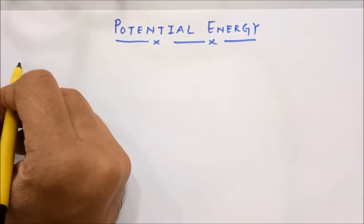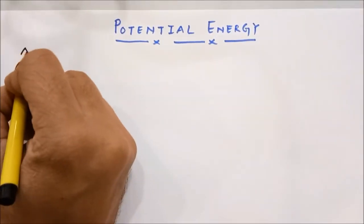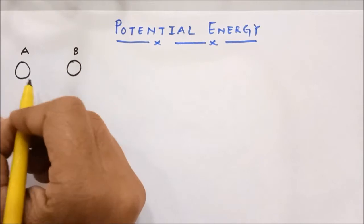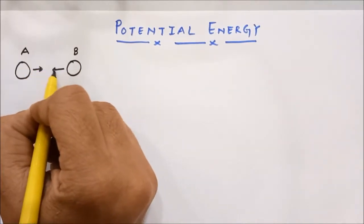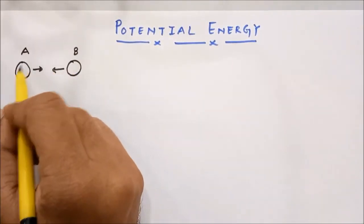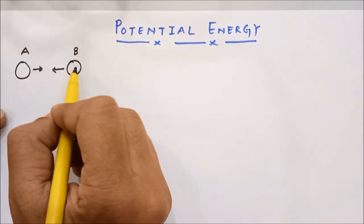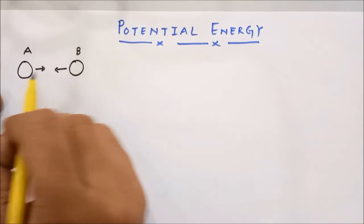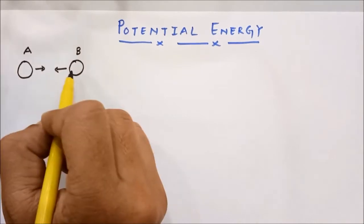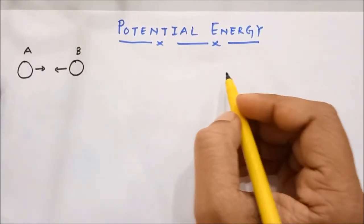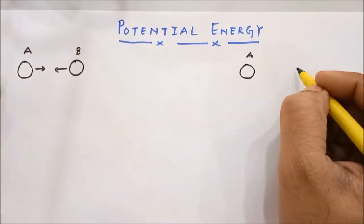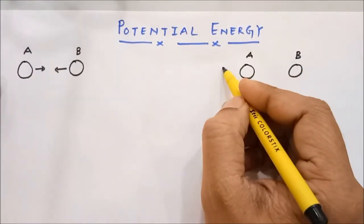Here you have two substances A and B. Let us assume they are attracting each other. You can call these two as positive and negative charges, or the north pole and south pole of two magnets, or simply two bodies attracting one another. You can also call this as the earth and this as an apple, because they are also attracting one another. In the other situation, there is a body A and a body B who are repelling one another.